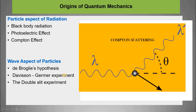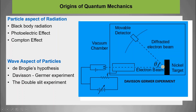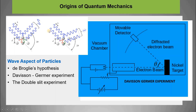Two key early experiments showed that particles behave as waves. The Davisson–Germer experiment directed an electron beam at a metal surface and recorded diffraction patterns analogous to X-ray diffraction in crystals — showing constructive and destructive interference. The double-slit experiment sends light or particles through two narrow slits and produces interference fringes on a screen.